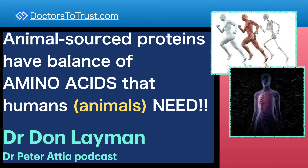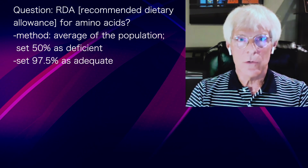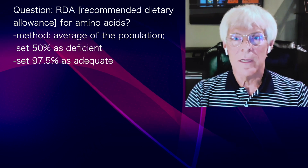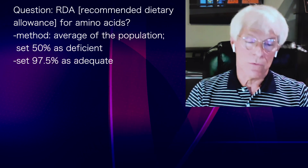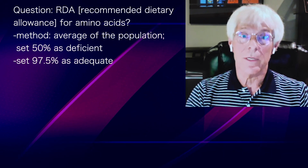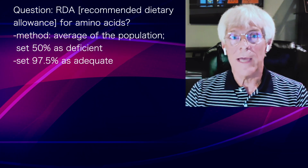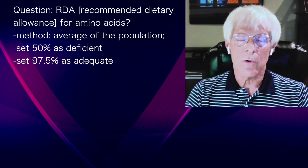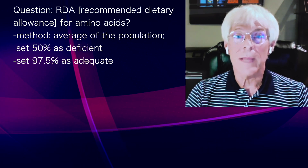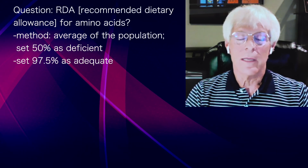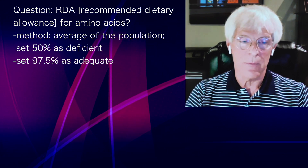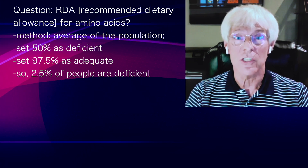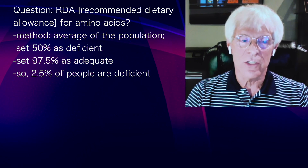For all RDAs, we test the population and come up with an average number. Since that average would leave 50% deficient, we add a safety factor of two standard deviations, which supposedly means 97.5% of people would be adequate to prevent any signs of inadequacy. But that also means 2.5% of people are actually deficient at that point — that's the definition.